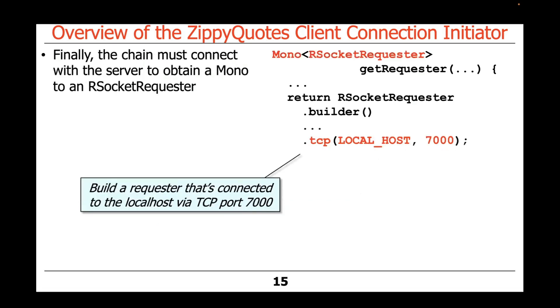Finally, the last piece of the puzzle in this chain is we have to connect to the server to obtain a Mono to the RSocket requester. We've got it connected to localhost at port 7000, though we could use other ports too if we wanted to.